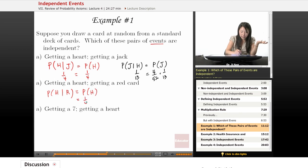Well, we already know this one. It's 1 out of 4. Same as here. Is the probability of getting a heart given that you already have a red card going to be different?